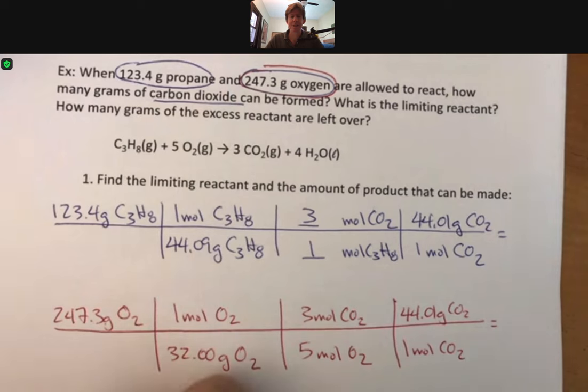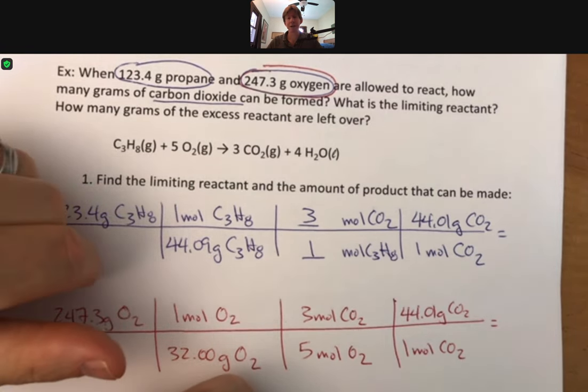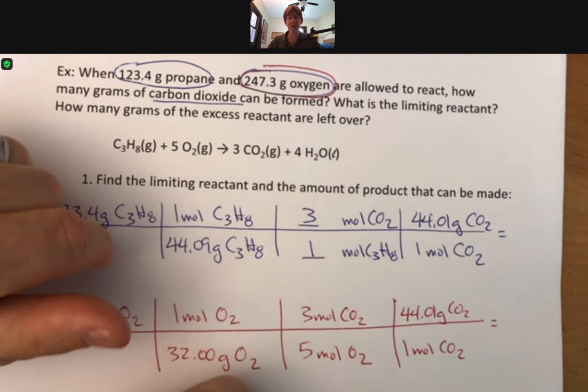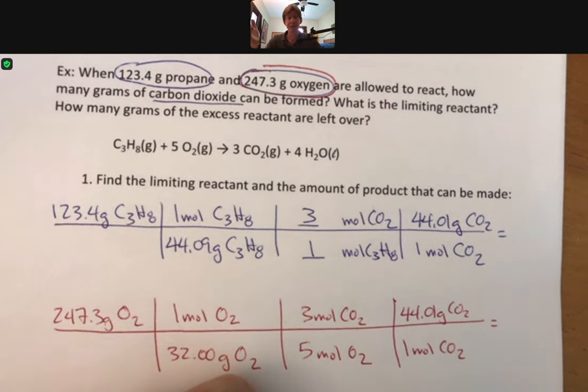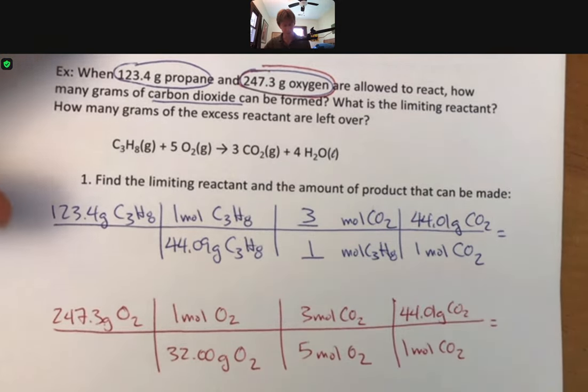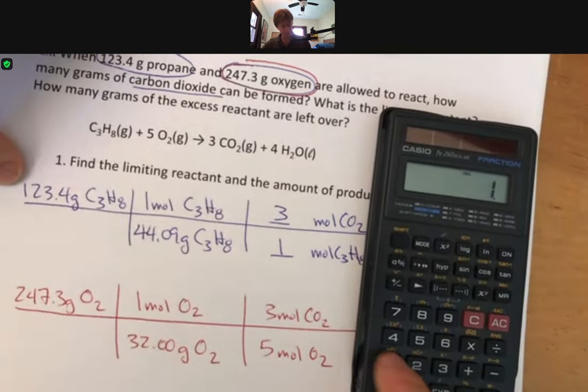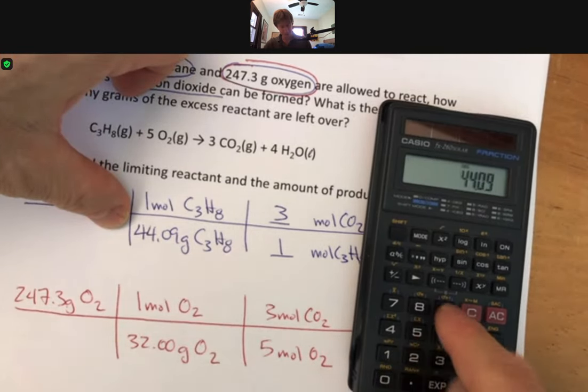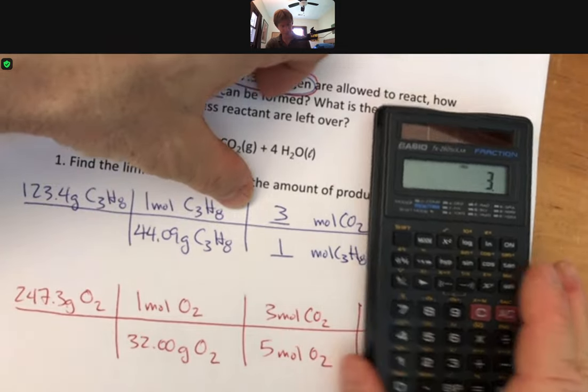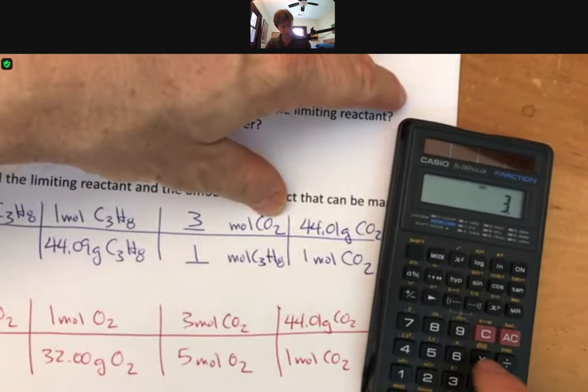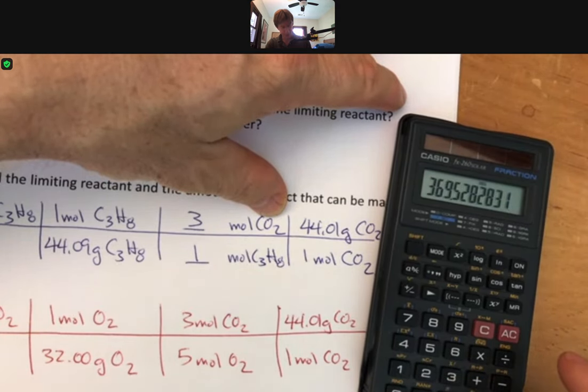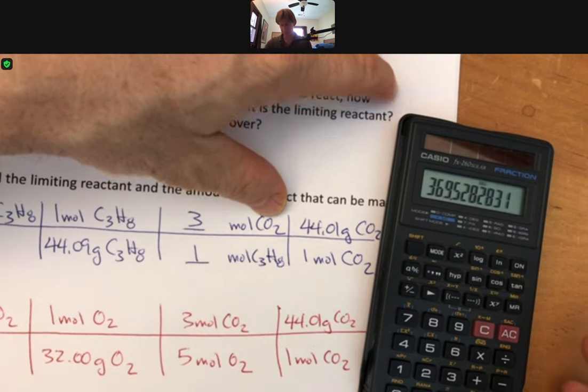We can use the periodic table to find that it's 32.00 grams for one mole. And to this point, maybe I should tell you that there are actually many ways to do limiting reactant problems. This is just my way. If your way is something that you are more comfortable with, as long as you can show me your work and as long as you get the right answer, those are the two criteria that we're looking for. All right, time to plug some of this into the calculator.